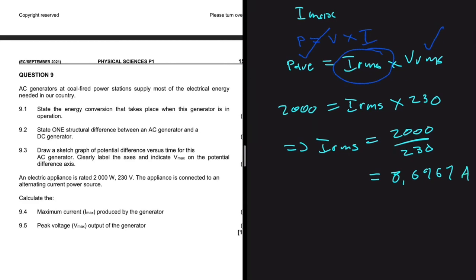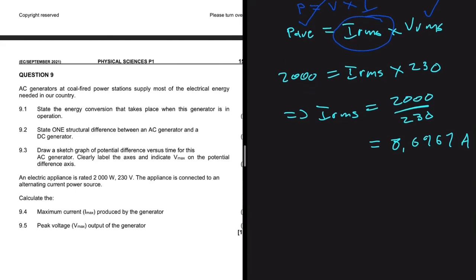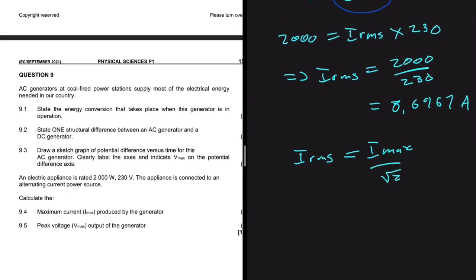So now we have the IRMS. We can go ahead and try to find the I-max. So what is the relationship between IRMS and I-max? We know fully well that IRMS is equals to I-max divided by the square root of 2. So in place of IRMS, we have 8.6957, being equals to I-max divided by the square root of 2.